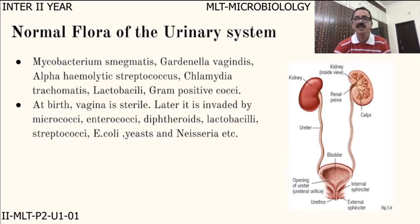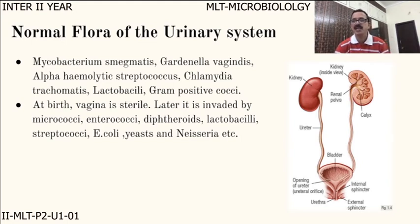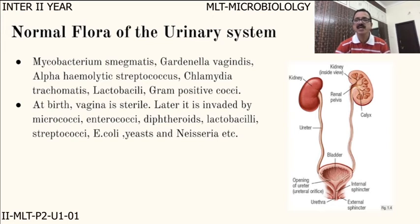Coming to the normal flora of the urinary system: Mycobacterium smegmatis, Gardnerella vaginalis, alpha-hemolytic streptococcus, Chlamydia trachomatis, lactobacilli, and gram-positive cocci are present. The vagina is sterile at birth, but later it is invaded by micrococci, enterococci, diptheroids, lactobacilli, streptococci, E. coli, and Neisseria.